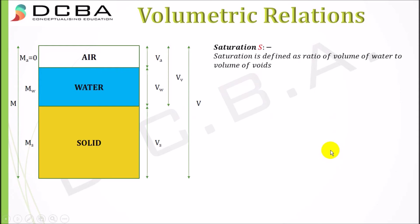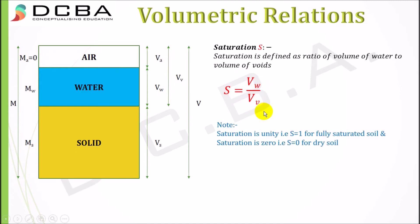Saturation S is defined as the ratio of volume of water to the volume of voids: S = Vw/Vv. Saturation equals 1 for fully saturated soils, and saturation equals 0 for dry soils, since in dry soil water is absent so Vw equals zero. For fully saturated soils, the volume of voids equals the volume of water, giving S = 1.